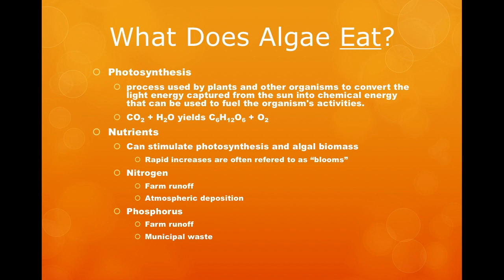What do algae eat? Or more accurately, what do algae need to grow and reproduce? Algae are photosynthetic organisms. Photosynthesis is the process by which solar energy from the sun is converted into chemical energy and stored as sugar. Carbon dioxide and water are converted inside the chloroplast of a cell to produce glucose and oxygen — the same process occurs in photosynthetic algae. All photosynthetic organisms require light, and in addition to light, plants and algae need nutrients. Excess nutrients can stimulate photosynthesis and increase algal biomass.